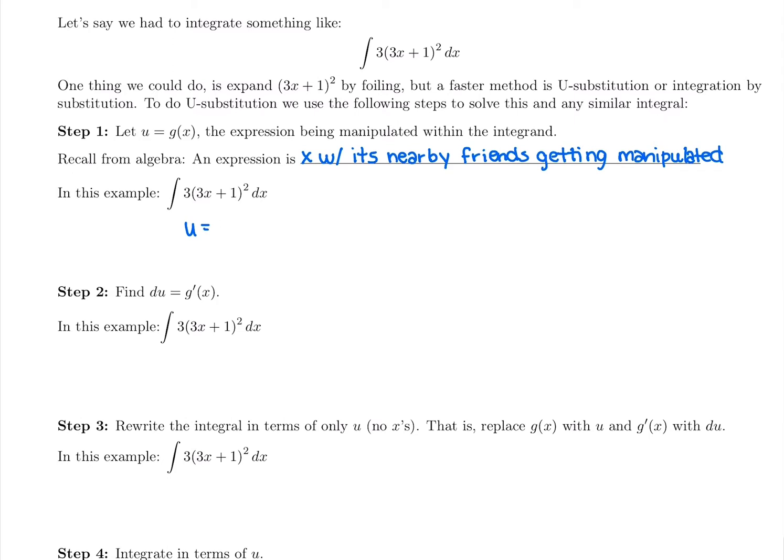For this one, we would call u that 3x + 1. x with whatever is around it, that's also getting manipulated. It's not just x getting squared, it's 3x + 1 getting squared. So we're going to call that u.